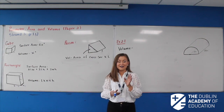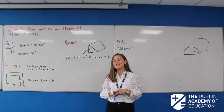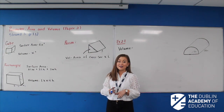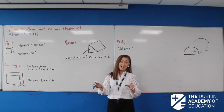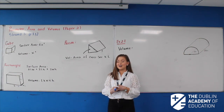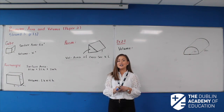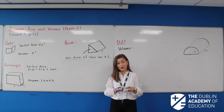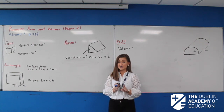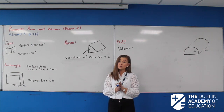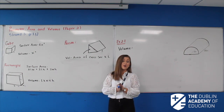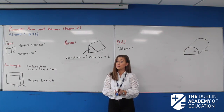Hi guys, welcome back to our second lesson on area, volume and perimeter. So just a recap on what we did in our last lesson: we looked at our two dimensional shapes and I have two questions for you to do yourself in the notes. Make sure before you move on to this one that you've practiced them, checked them, and gone through them.